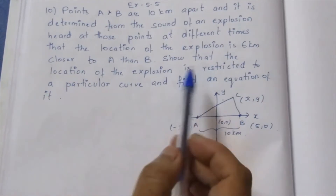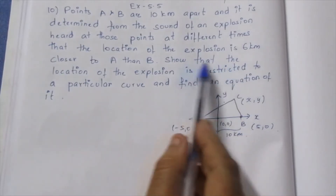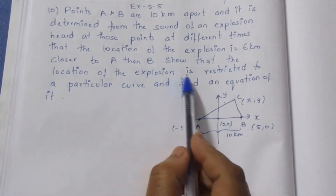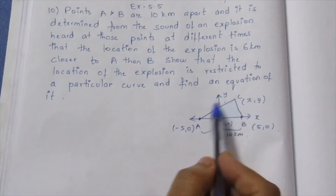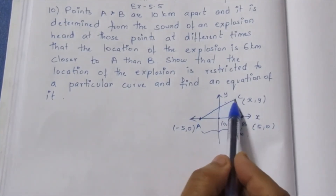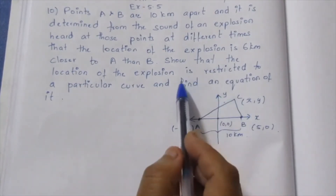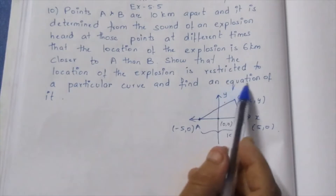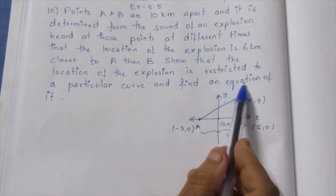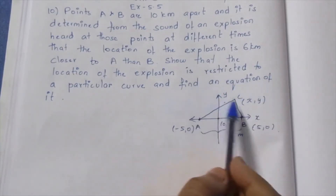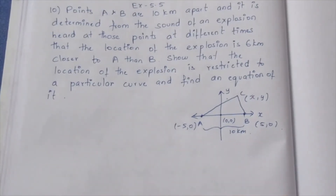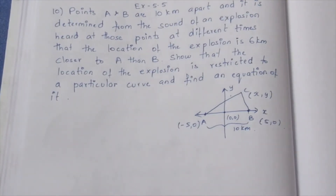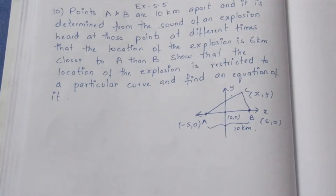Show that the location of the explosion is restricted to a particular curve. This is a moving point. What is the equation of the curve? We know this could be a parabola, hyperbola, or ellipse.